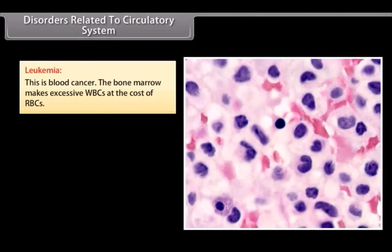Leukemia. This is blood cancer. The bone marrow makes excessive WBCs at the cost of RBCs.